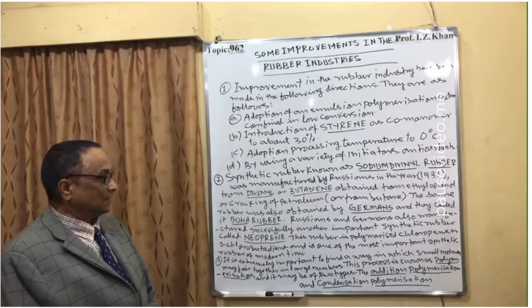Since industries have started adopting improvements in rubber industry, one major improvement is emulsion polymerization. With the help of emulsion polymerization, there has been a lot of improvement in the rubber industry. Quality is improved and a variety of rubber products are produced due to the introduction of emulsion polymerization.